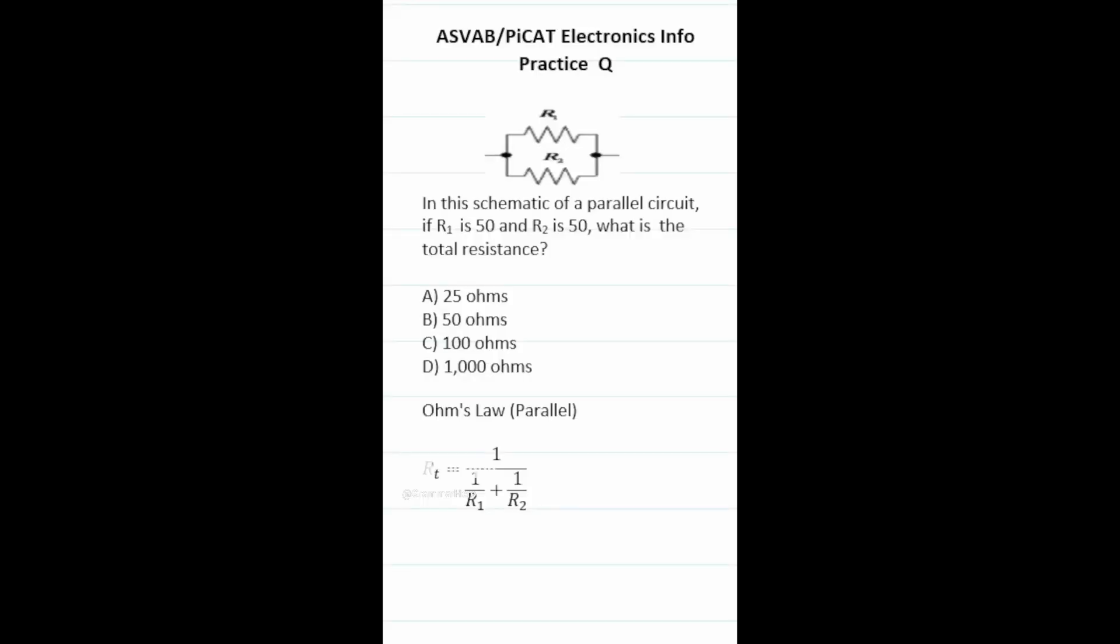For this ASVAB PiCAT Electronics Information Practice Test question, we're trying to calculate the total resistance in a parallel circuit. We're going to use Ohm's law, specifically this formula. Thankfully, we know all these values. We know R1 is 50, so plug that in accordingly. Likewise, we know R2 is also 50.